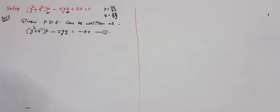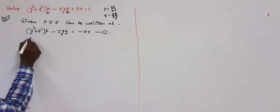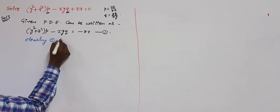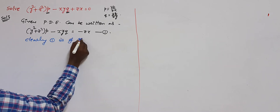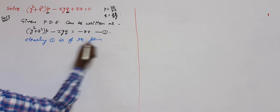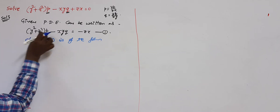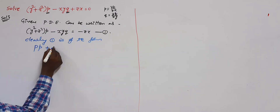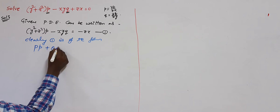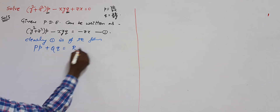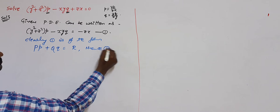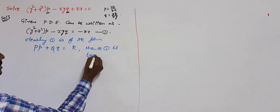We observe that equation 1 is of the form: Capital P·(small p) + Capital Q·(small q) = R. Hence, equation 1 is called Lagrange's PDE.